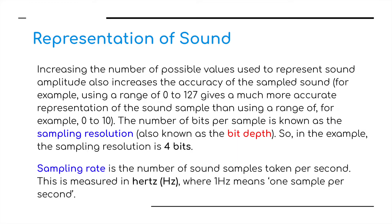Increasing the number of possible values used to represent sound amplitude also increases the accuracy of the sampled sound. For example, using a range of 0 to 127 gives a much more accurate representation. The number of bits per sample is known as the sample resolution, also known as bit depth. In the previous example the sampling resolution is 4 bits. Sampling rate is the number of sound samples taken per second, measured in hertz, where one hertz means one sample per second.